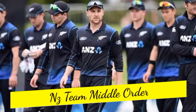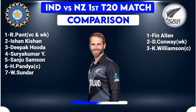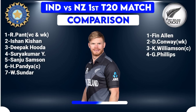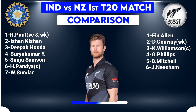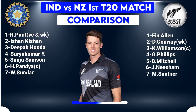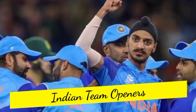Team New Zealand middle order: Number 3 Kane Williamson, Captain and Right-hand Batsman. Number 4 Glenn Phillips, Right-hand Batsman. Number 5 Daryl Mitchell, All-Rounder. Number 6 Jimmy Neesham, All-Rounder. Number 7 Mitchell Santner, All-Rounder.